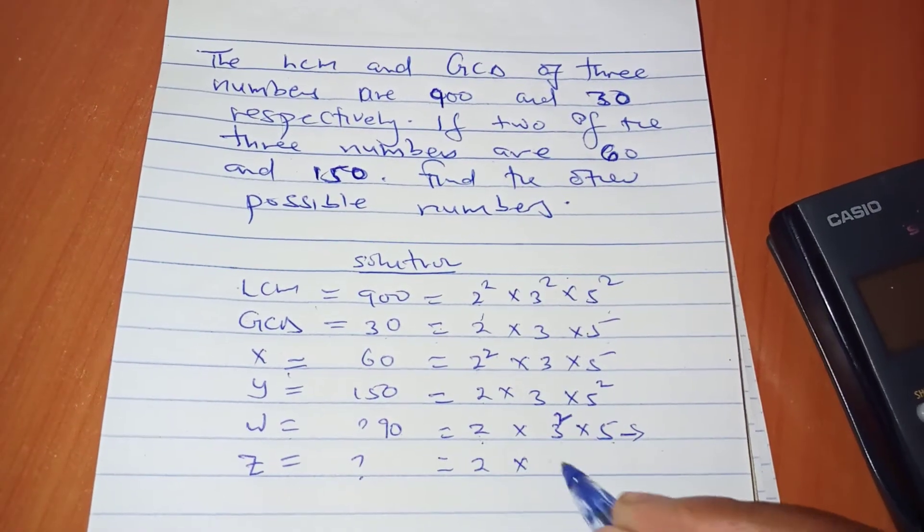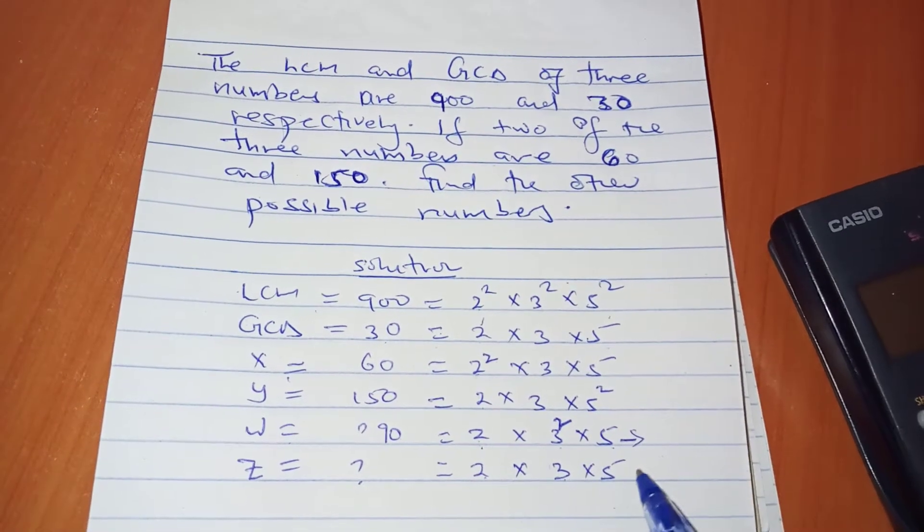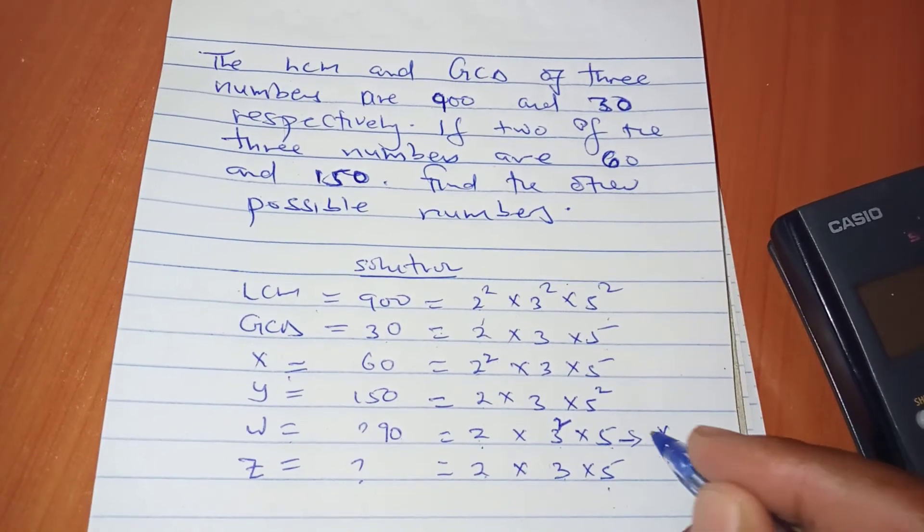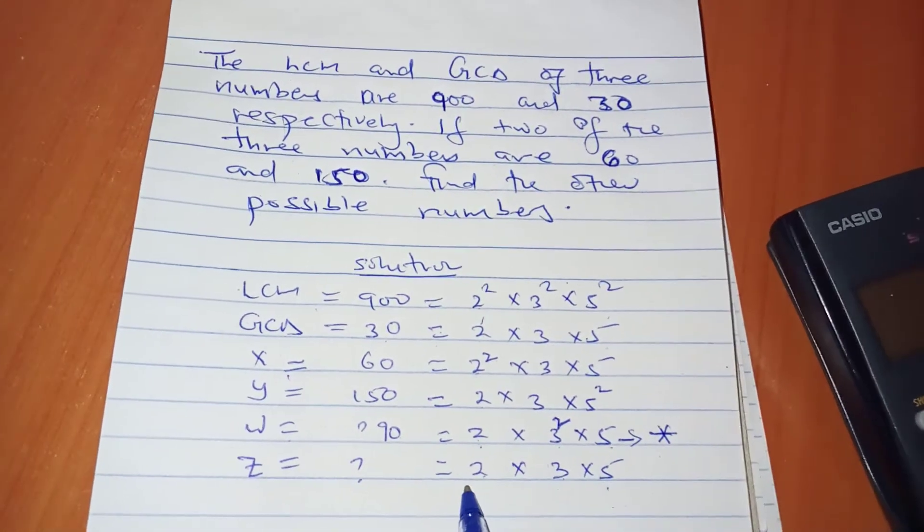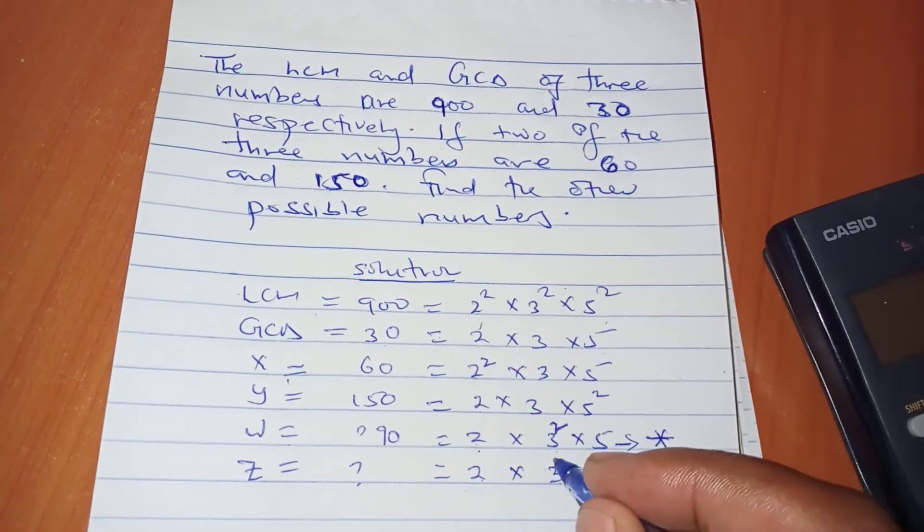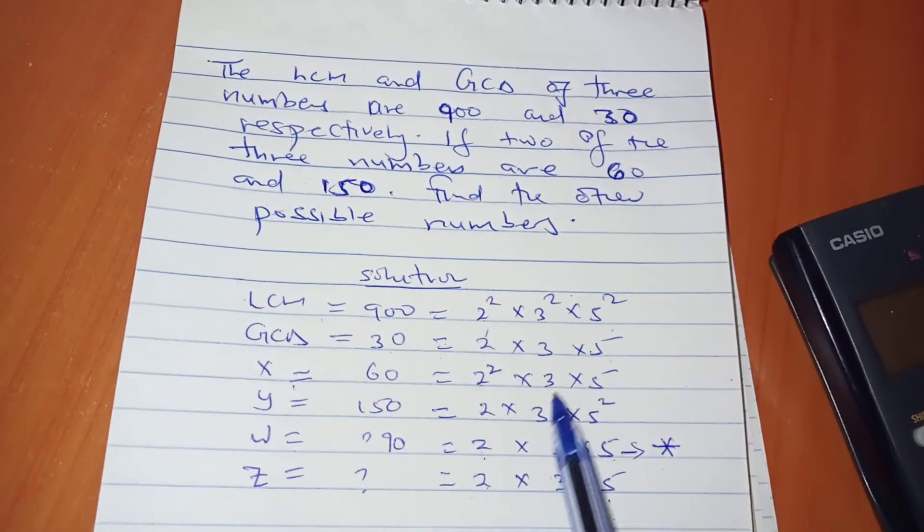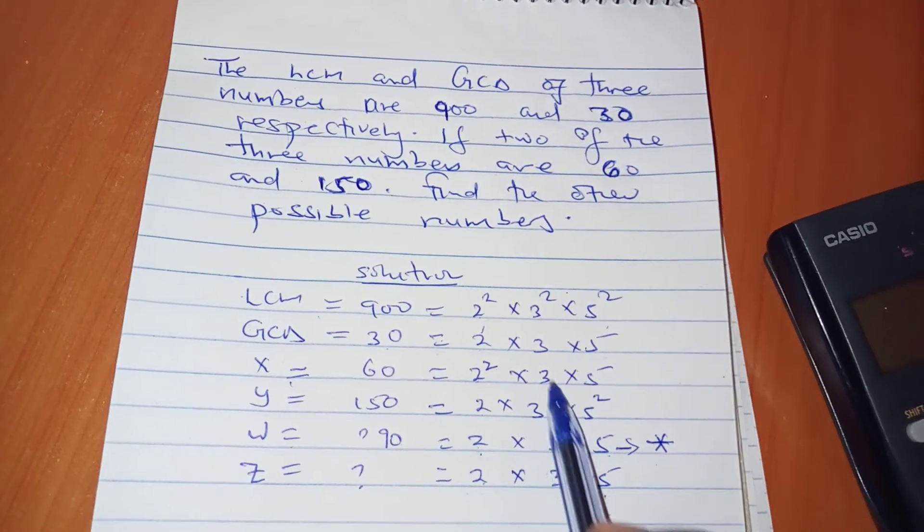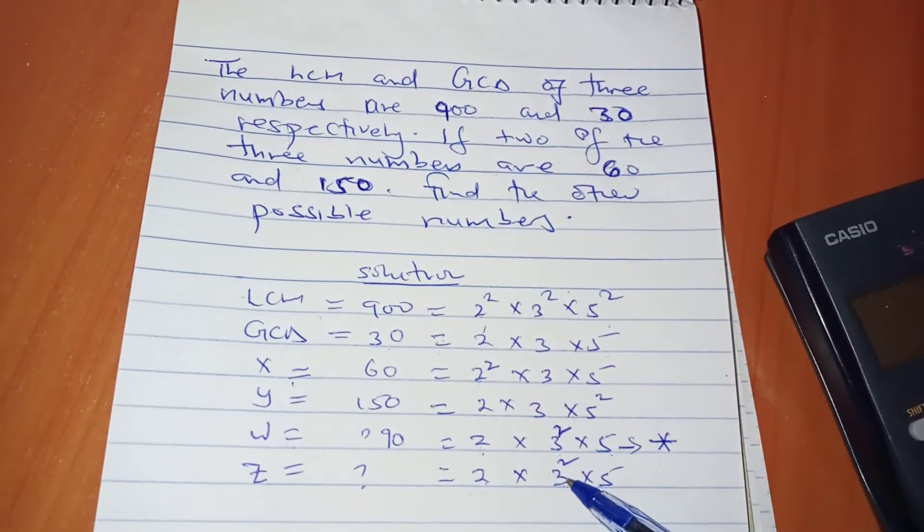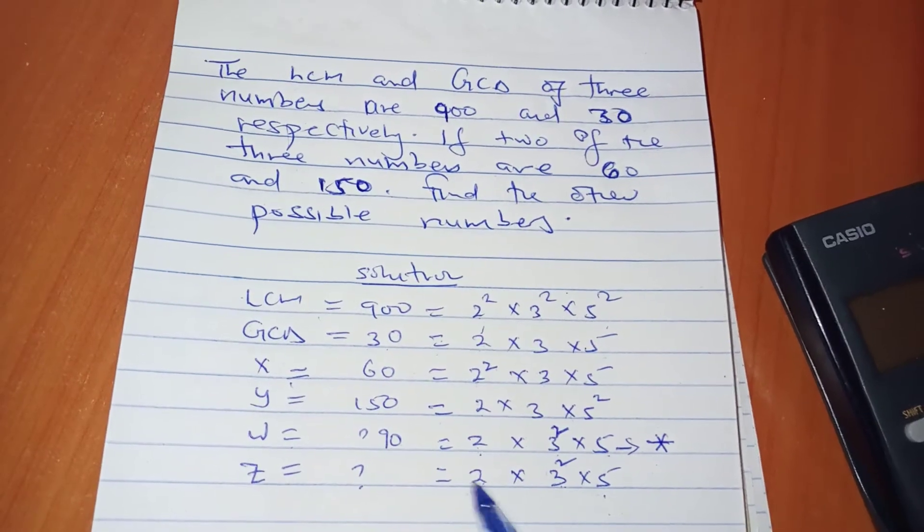The GCD requires that 2¹, 3¹, and 5¹ be there. We've seen that the incoming number must have 3² because none of the two given initially had a power of 2 for the 3. Then you can alter the other powers.